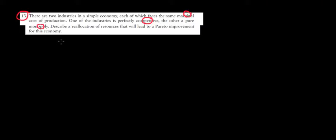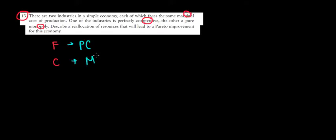Let's work a bit more practical with some examples. Let's say we have two industries: food and clothing. In food production, we have perfect competition between firms. In the clothing industry, we have a monopoly — one single producer.